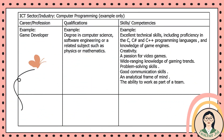Here's the example. ICT sector or industry: computer programming — again, choose the one you are most interested in. Then, for career or profession, example: game developer. On the second column, qualifications, example: a degree in computer science, software engineering, or a related subject such as physics or mathematics. For the third column, skills and competencies, example: excellent technical skills including proficiency in C, C-sharp, and C++ programming languages, and knowledge of game engines.